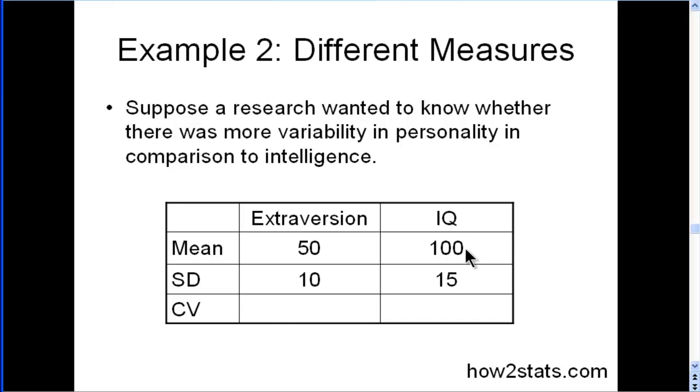And for IQ, a mean of 100, and a standard deviation of 15. How would you be able to compare these two meaningfully to say whether there's more variability in the population for personality versus intelligence?